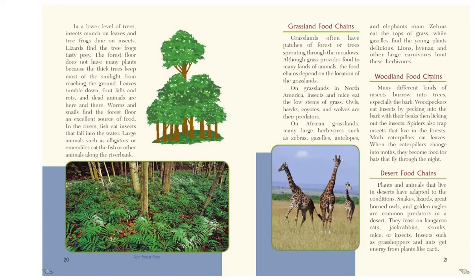Woodland food chains. Many different kinds of insects burrow into trees, especially the bark. Woodpeckers eat insects by pecking into the bark with their beaks and then licking out the insects. Spiders also trap insects that live in the forests. Moth caterpillars eat leaves, and when the caterpillars change into moths, they become food for bats that fly through the night.